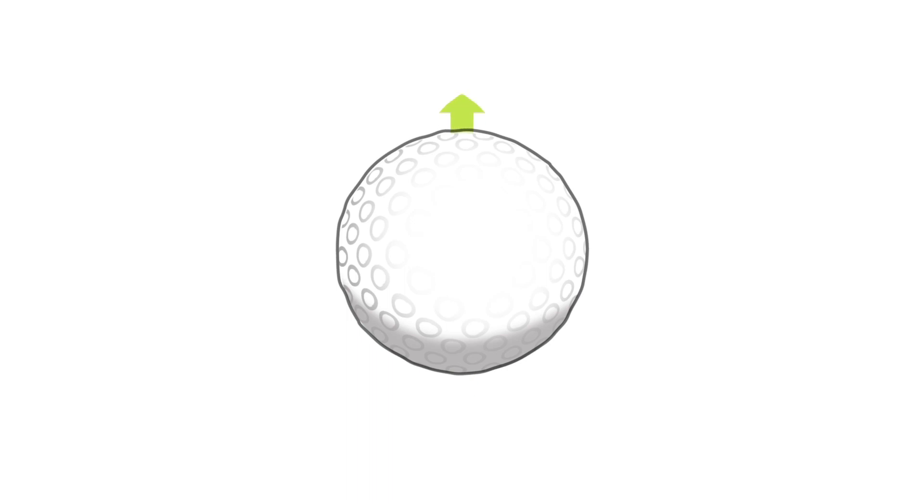The golf ball really only spins on one axis, but we divide it into backspin and sidespin to make it easier to understand and to make changes to your swing or equipment. So another term you may hear in the industry is spin axis, which measures the tilt of this single axis.